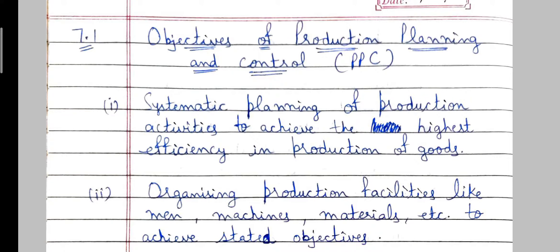Our next topic is the objectives of production planning and control. Why do we do production planning and production control? The first objective is systematic planning of production activities to achieve the highest efficiency in production of goods. If we want to achieve maximum efficiency in our production, we have to do systematic planning.